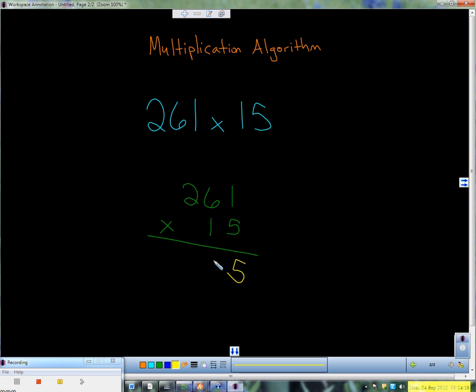5 times 6 is 30. I put my 0 and I carry my 3. So we still have 30, but I'm carrying the 3.